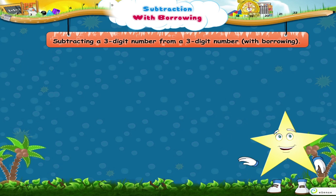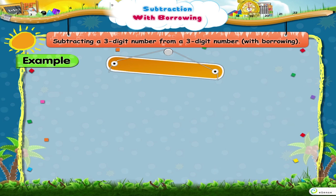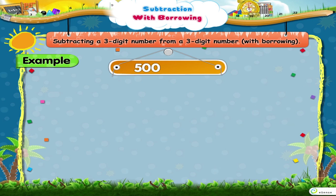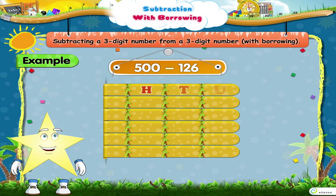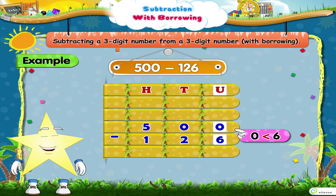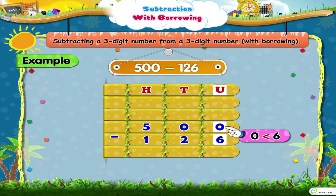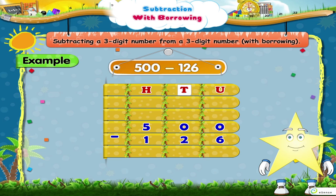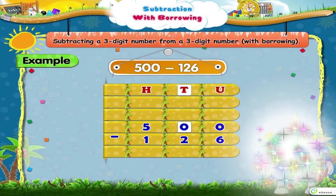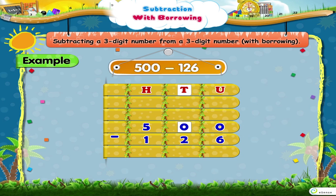Let us see another example. 500 minus 126. If you observe carefully, 0 unit is less than 6 units. We cannot subtract 6 from 0. We need to borrow from the tens place. But even the tens place has a 0. So, we cannot borrow from the tens place either. Now, what do we do?